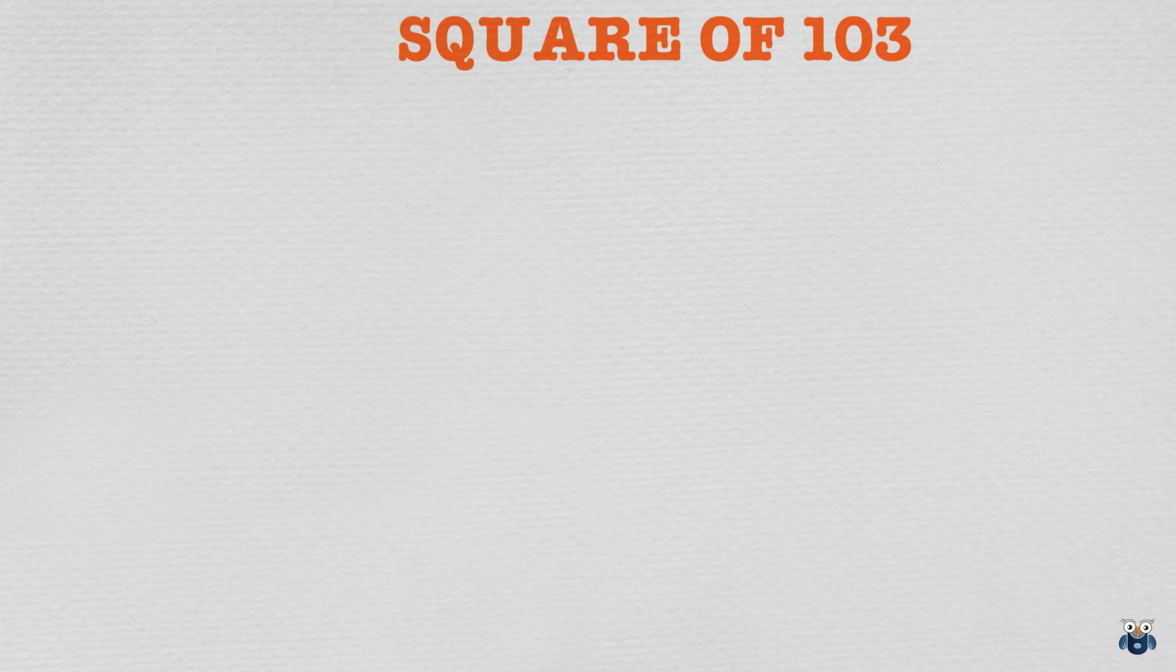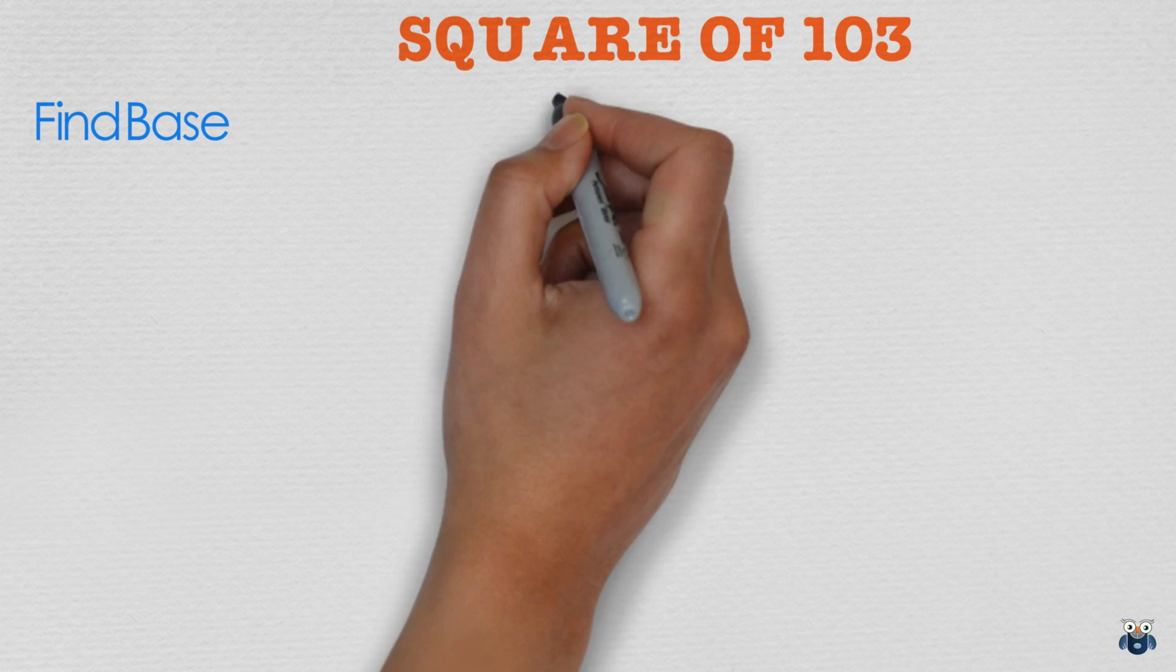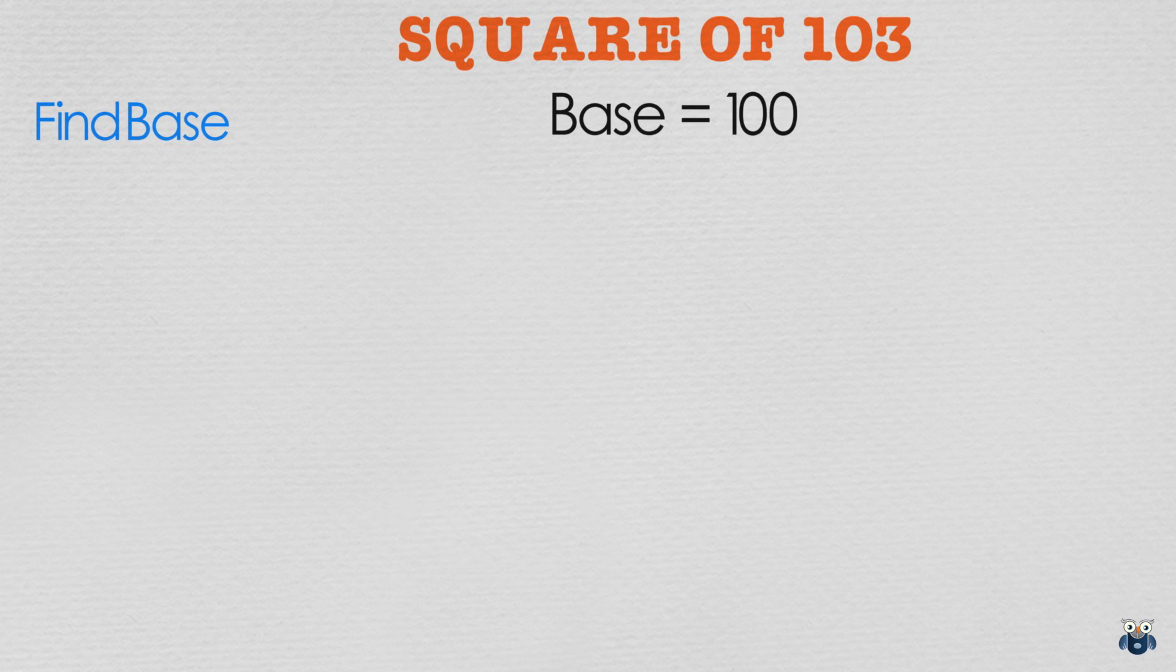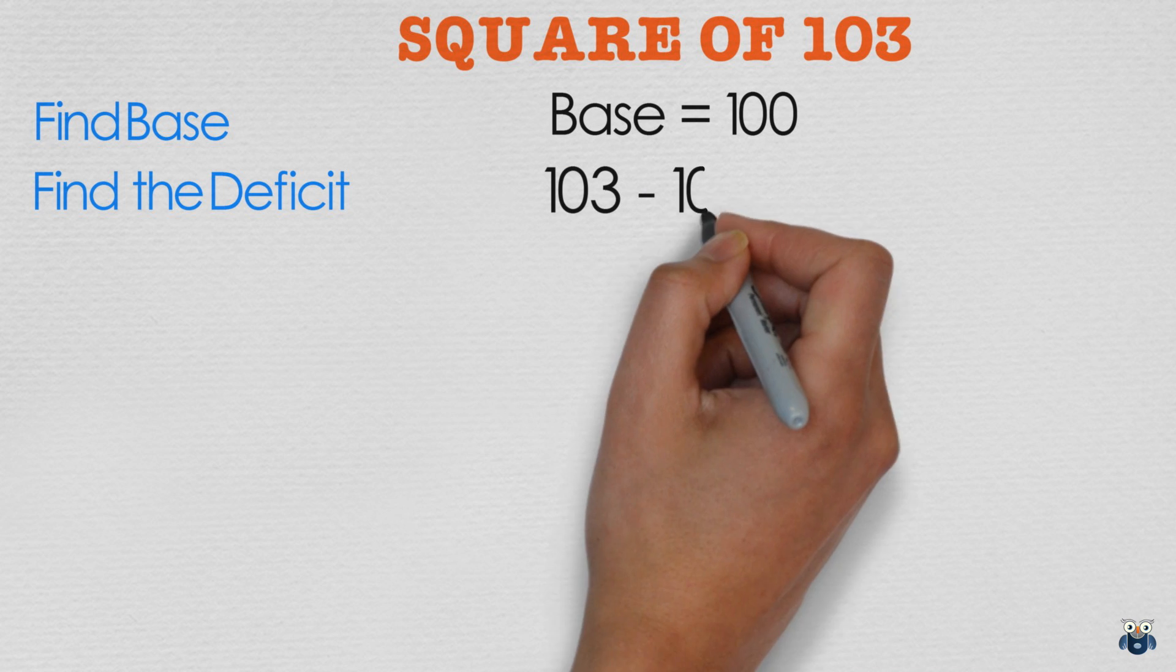What is the square of 103? We first find out the base. 103 is close to 100 so our base is 100 yet again. We then find the deficit. 103 is 3 more than 100 so our deficit is 3.